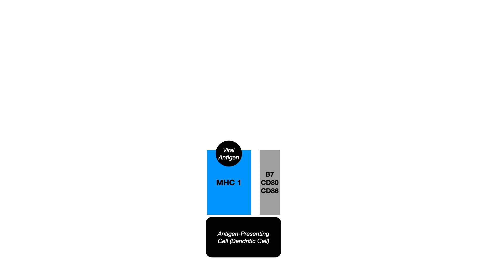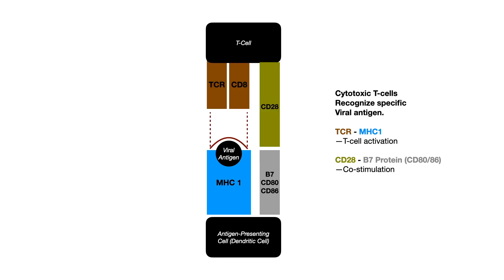Let's look at what happens when MHC1 presents a viral antigen. We see the viral antigen sitting on MHC1 on an antigen presenting cell or a dendritic cell. In addition to MHC1, that antigen presenting cell has a B7 protein. On your exam, you might see it written as B7 protein, CD80 fragment, or CD86 fragment — these are all semi-interchangeable, and that B7/CD80/CD86 is also expressed on the antigen presenting cell.